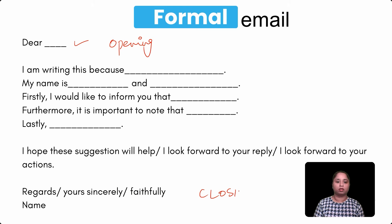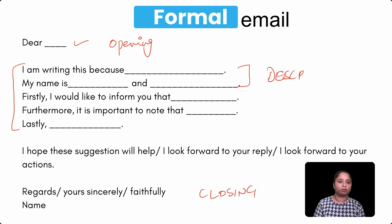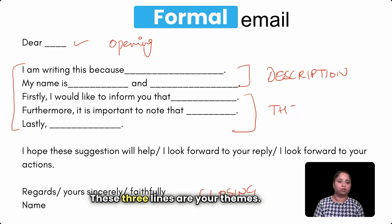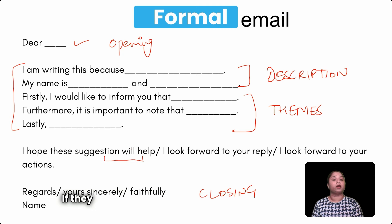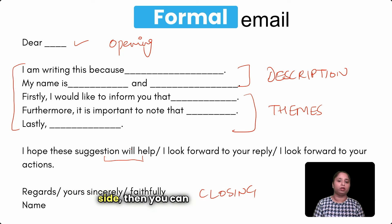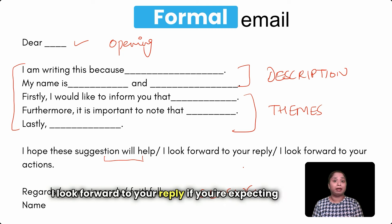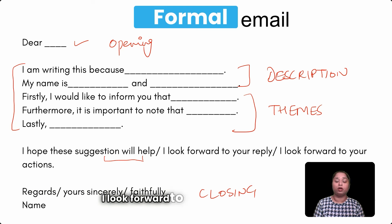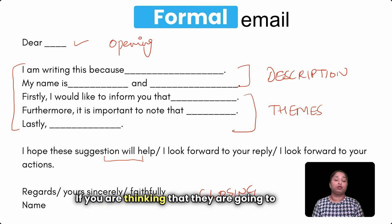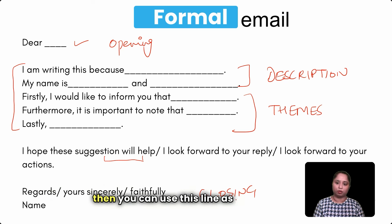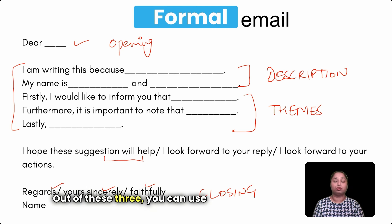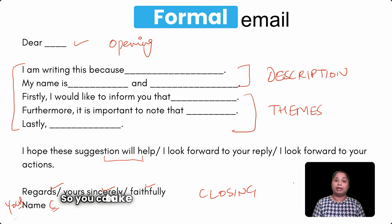Here is the template for formal email writing. The opening remarks are at the top, the closing ones at the bottom, and in between you put the information from the description box. The three lines in the middle cover your themes — if only two things are mentioned, two lines is fine. Use 'I look forward to your reply' if expecting a response, or 'I look forward to your action' if expecting steps to be taken. Close with 'Regards,' 'Yours sincerely,' or 'Faithfully,' followed by your full name.